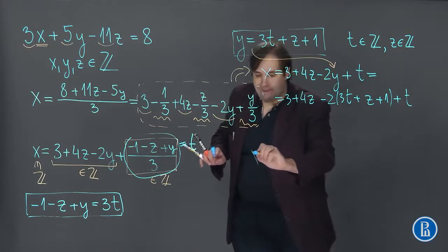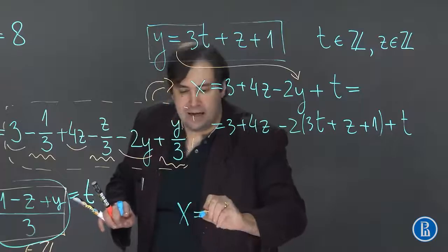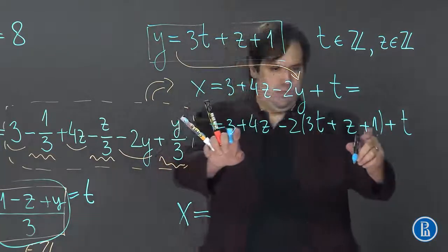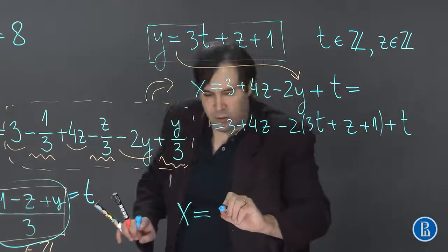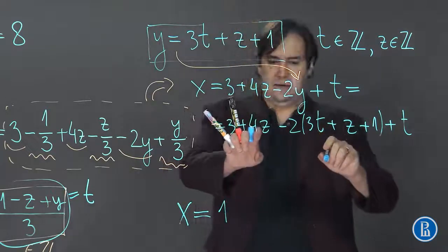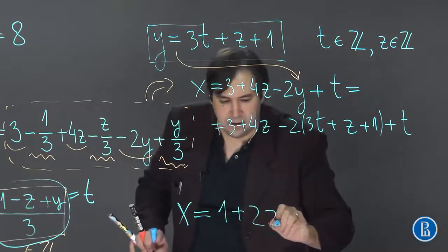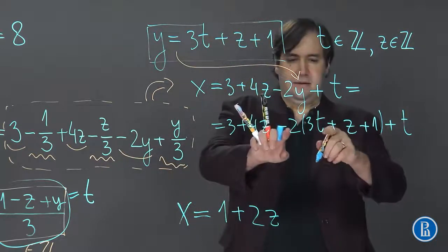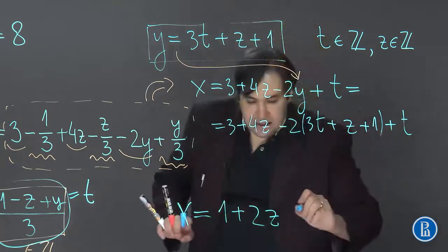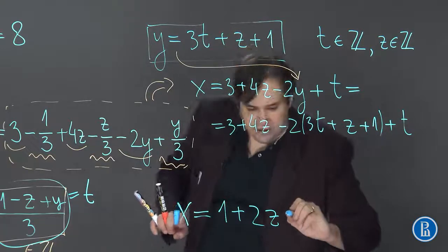And therefore, x is equal to 3 minus 2, which is 1, and 4z minus 2z is plus 2z, and minus 6t plus t is minus 5t.